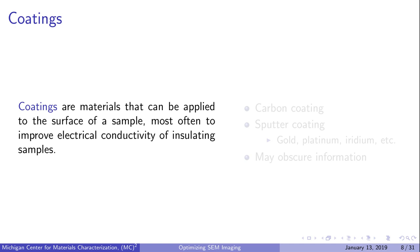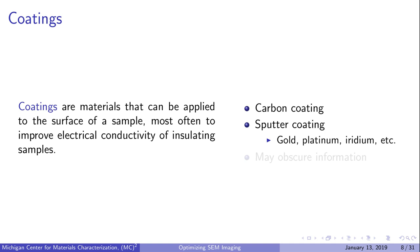Coatings are materials that you can apply to the sample surface, most often used to improve electrical conductivity of insulating samples and avoid charging. Various coatings can be applied using the carbon coater or sputter coater at MC Squared, the most common being gold. While coating insulating samples is often necessary, coatings cover the surface and may obscure information depending on the coating composition and thickness. This is important if your features of interest are near the surface or if you plan on using EDS for element identification, as you may pick up signal from your coating. It's generally recommended that you try imaging a sample before coating it.